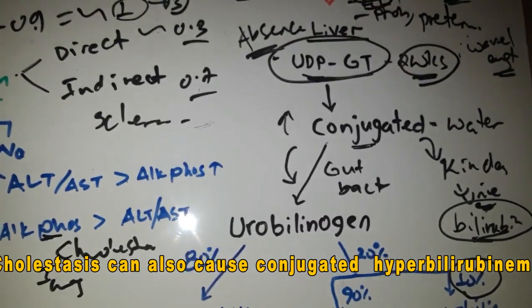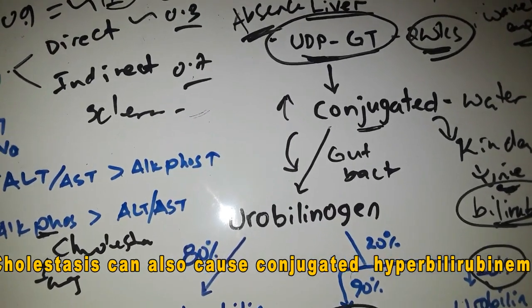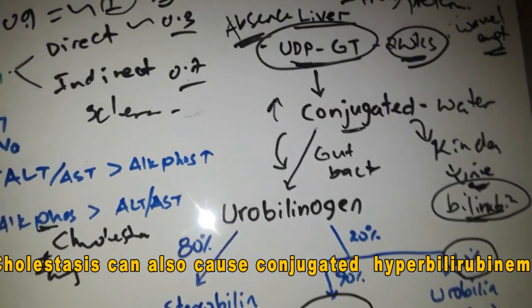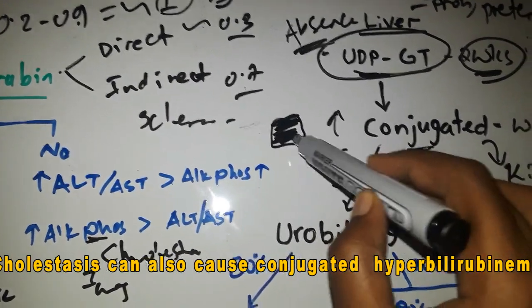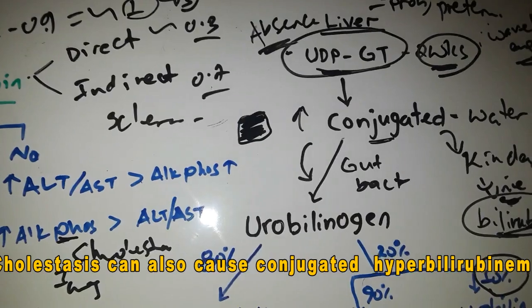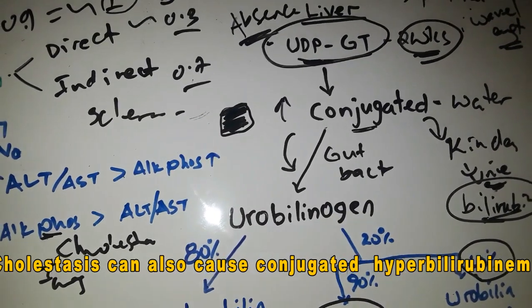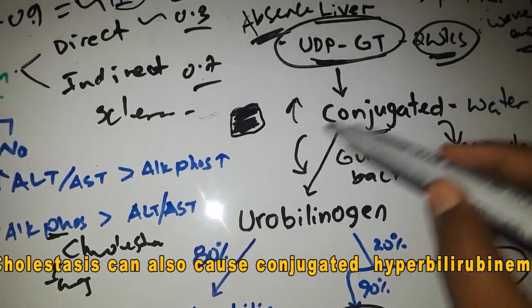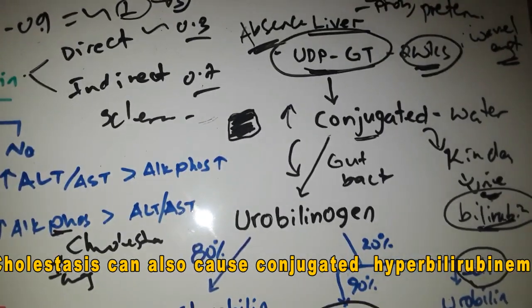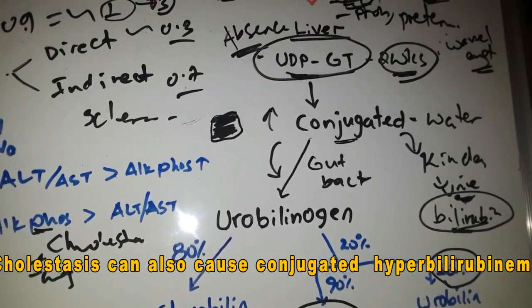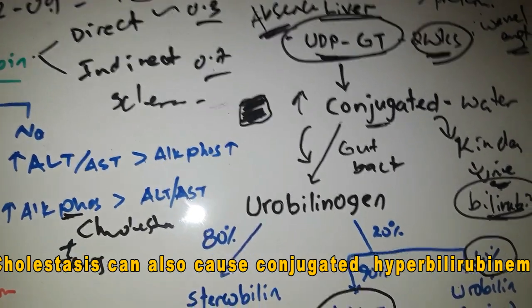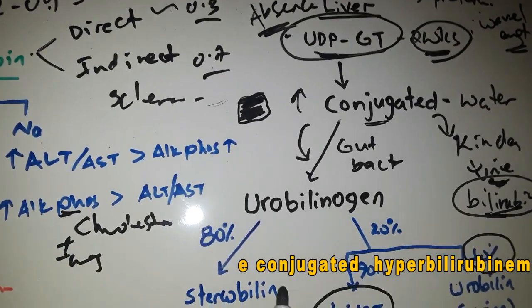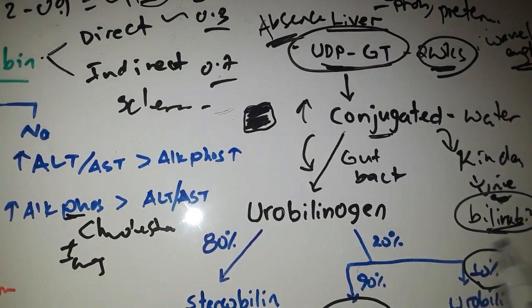Dubin-Johnson syndrome involves mild elevated conjugated bilirubin. An incidental finding on surgery is a lot of conjugated bilirubin deposits in the liver, giving the liver a dark appearance — a dark liver. Dublin-Johnson syndrome is a liver bilirubin excretion defect with elevated conjugated bilirubin and a dark liver. Rotor syndrome does not cause a dark liver, but there is still elevated conjugated bilirubin.